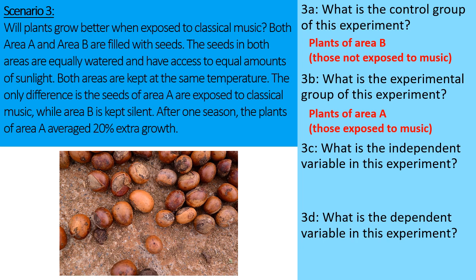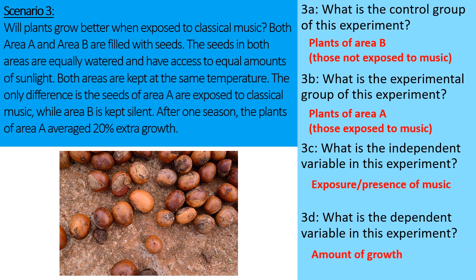Part C, what is the independent variable? How do these two groups differ? Well, one is given music and one isn't. So the independent variable is the exposure or presence of music. Part D, the dependent variable — that's the data being measured. In this case, it's the amount of growth. I hope you found this review to be helpful. We'll talk about this in class. Thank you very much.